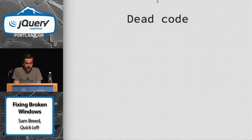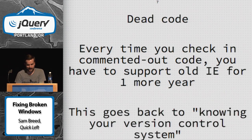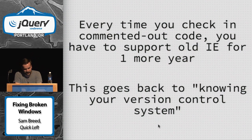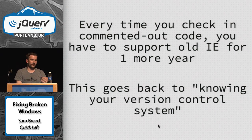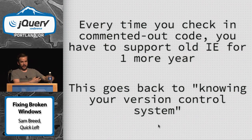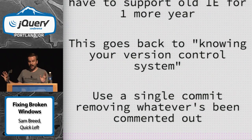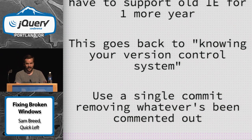One of my favorites: dead code. Every time you check in commented-out code, you have to support old IE for one more year. Everybody has done this. You comment out code because you don't know why it was there but you don't need that code path anymore. That stuff accumulates over time and no one's going to delete it if it's just commented out because somebody might need it someday. But know your version control system — use a single commit and say you're removing X, Y, or Z. I don't know what it does, but I'm removing it because it was commented out. Kill it with fire.